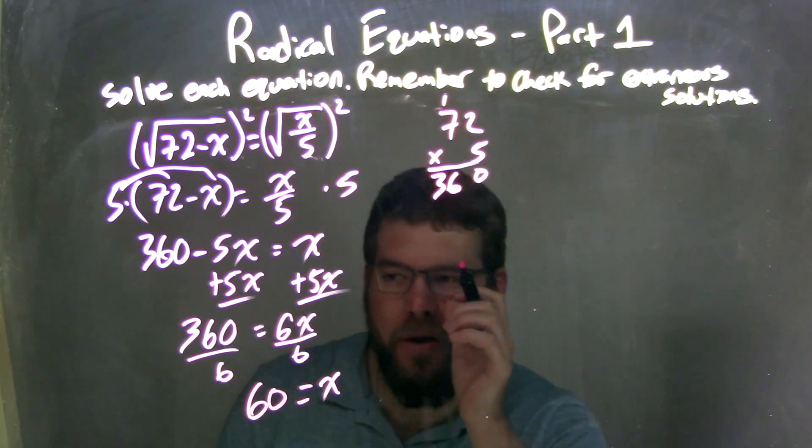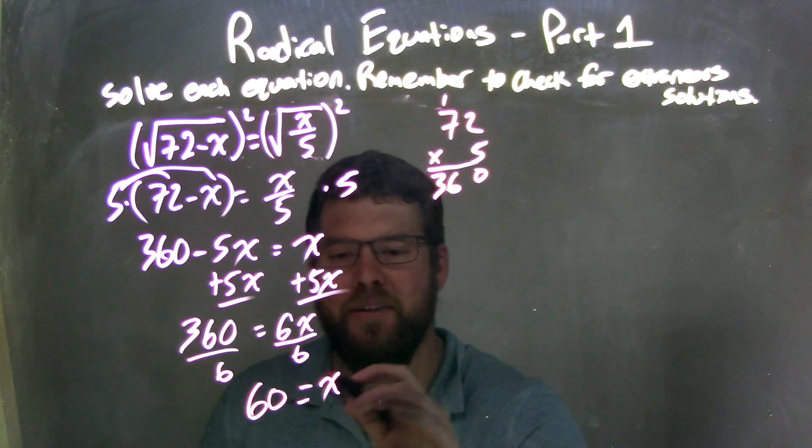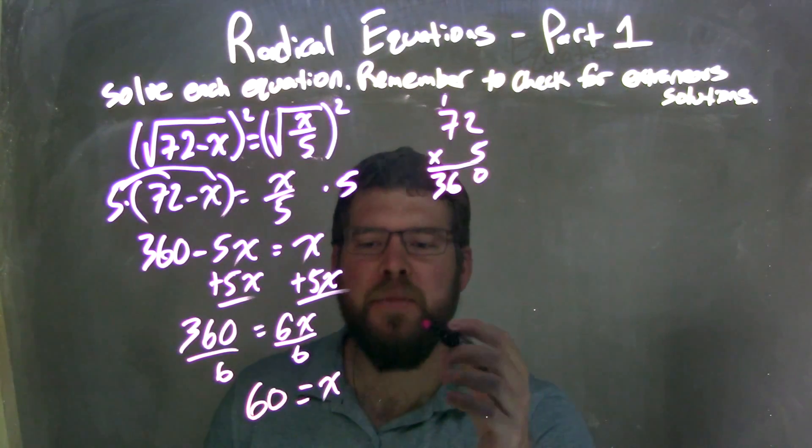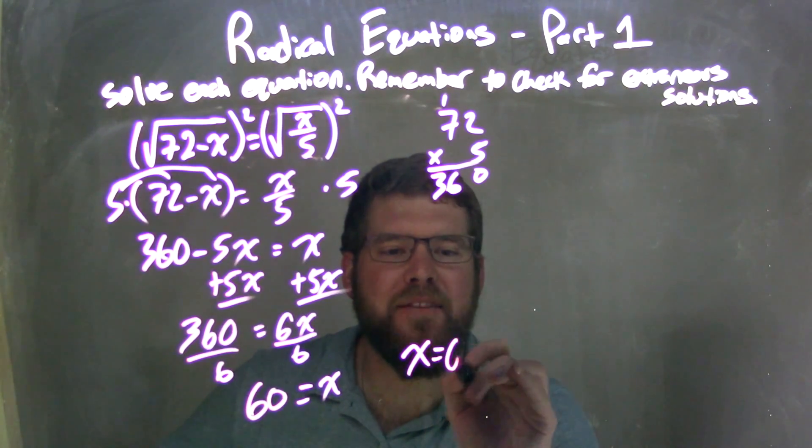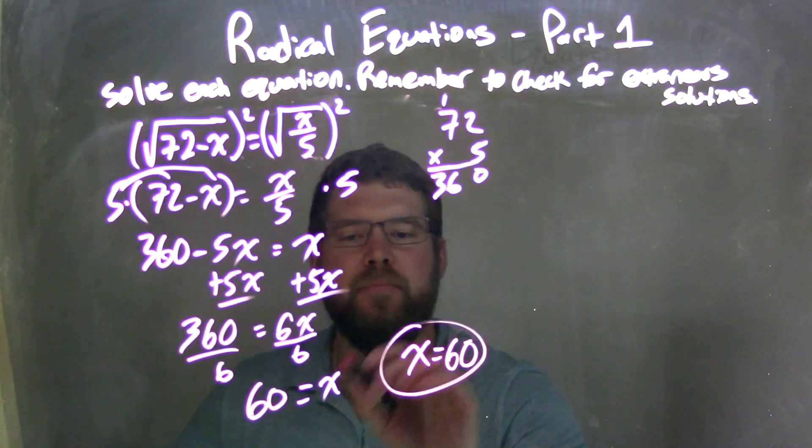6 goes into 36, 6 times. Hopefully you know that. If not, no worries. You can do long division. So we have 60 equals x here. Rewrite that nice and neat. x equals 60, x coming first.